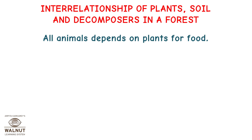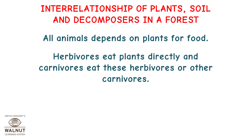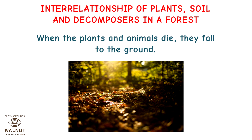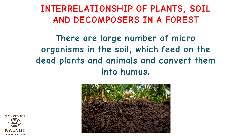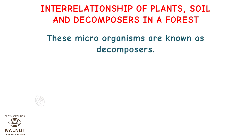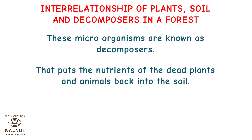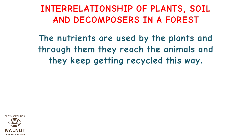Interrelationship of plants, soil, and decomposers in a forest: all animals depend on plants for food. Herbivores eat plants directly and carnivores eat these herbivores or other carnivores, forming food chains. Many food chains have common elements which form the food web. When plants and animals die, they fall to the ground. Large numbers of microorganisms in the soil feed on the dead plants and animals and convert them into humus. These microorganisms are known as decomposers, and they put the nutrients of dead plants and animals back into the soil. The nutrients are used by plants and through them they reach the animals, keeping getting recycled this way.